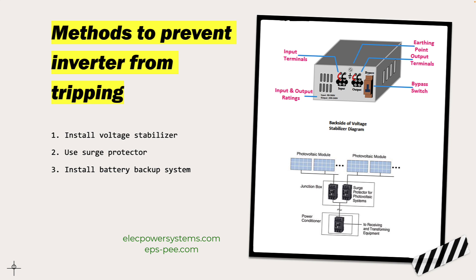There are other measures that can be taken to minimize the impact of sudden fluctuations in grid voltage on inverters. For example, you can use surge protectors to protect the inverter from voltage spikes and surges, which can occur when there are lightning strikes or other electrical disturbances. Another approach is to install a battery backup system that can provide power to the inverter when the grid voltage is unstable or during power outages. Battery backup systems can also help to reduce the load on the grid during peak demand periods, which can help to stabilize the voltage.